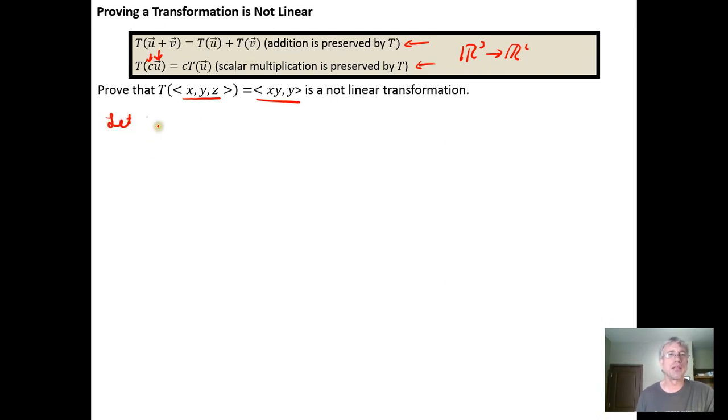So I'm going to start here and say let U be a three-component vector, so U sub one, U sub two, U sub three, and we're going to let C be a scalar. So C is an element of the real numbers.